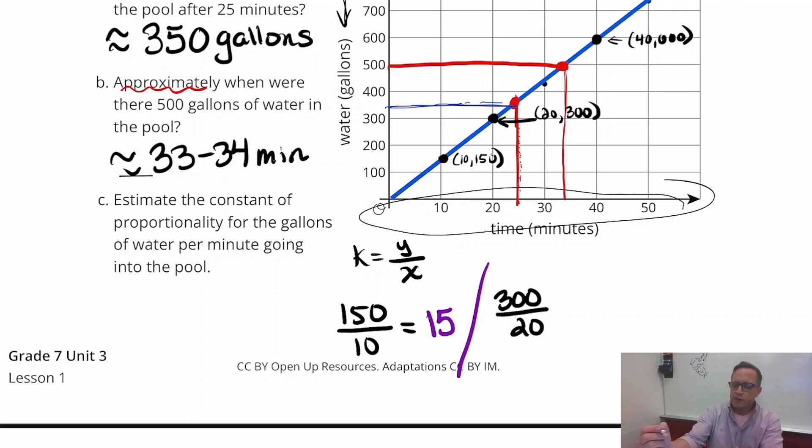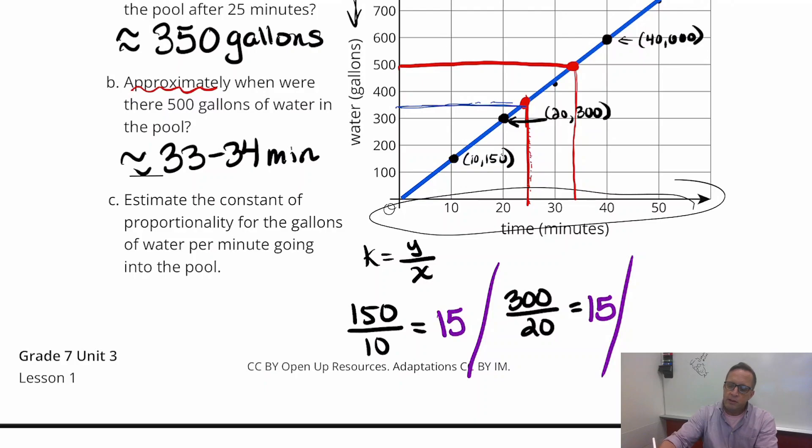The other one is 300 divided by 20. And oh, that's also going to be 15. We divide it. So that's probably the estimate here. I'll just do one more for good luck here. You've got, what is that, 600? Yeah. 600 divided by 40. And guess what? Spoiler alert, it's 15. It's 15.